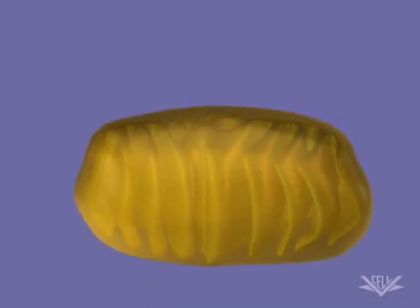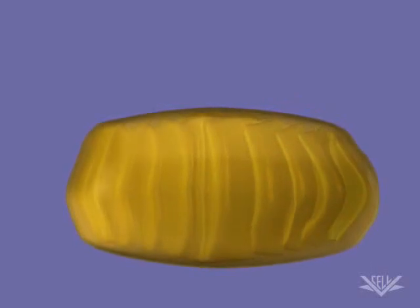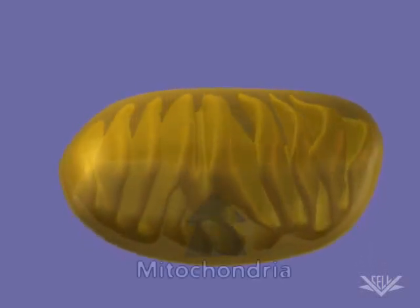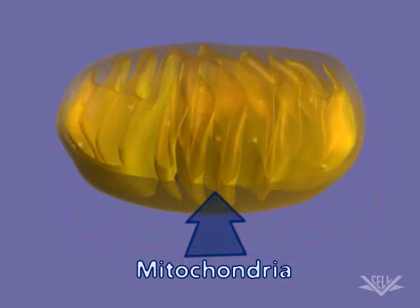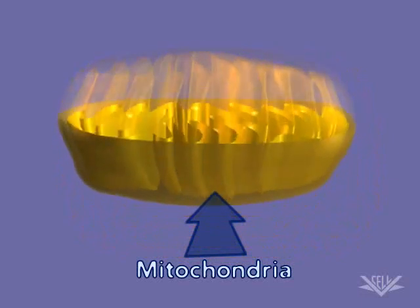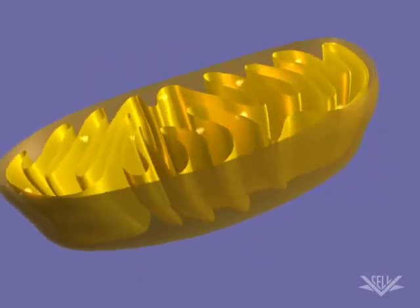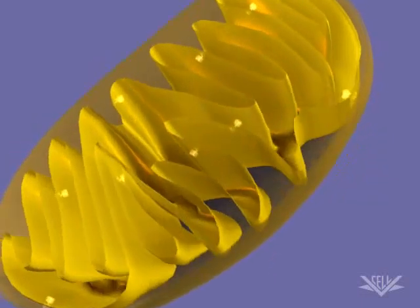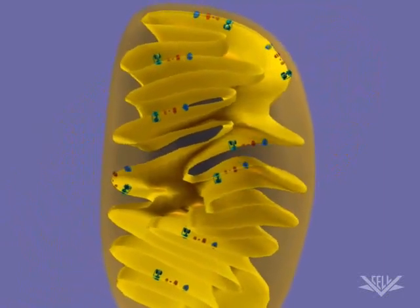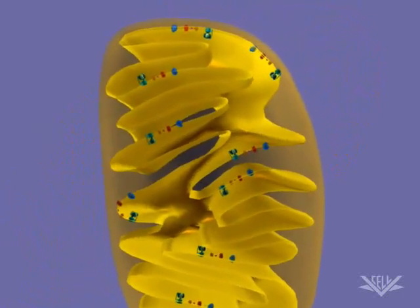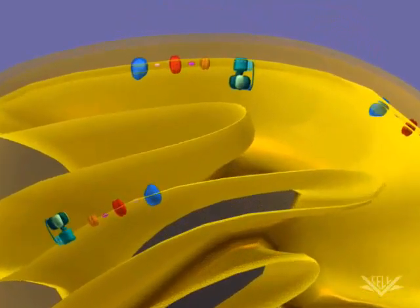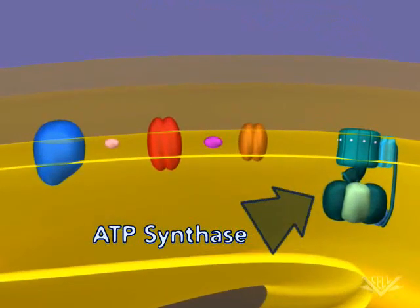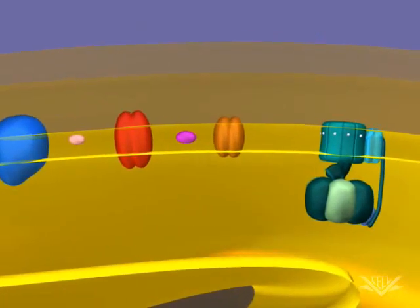Gradients and the potential energy they create are key aspects of the biological world. A good example of the use of a gradient occurs in the mitochondria when ATP is synthesized. ATP is synthesized by ATP synthase, a large complex of membrane-bound protein. Here we see ATP synthase, along with other membrane-bound proteins.